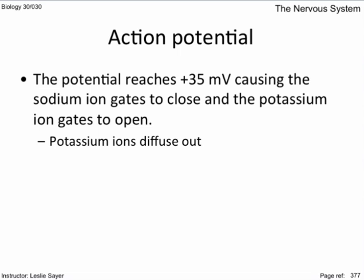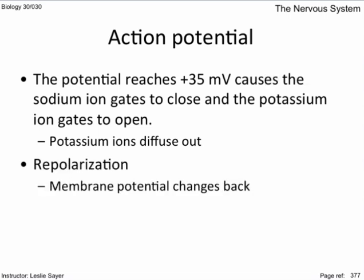The potential reaches plus 35 millivolts, causing the sodium ion gates to close and the potassium ion gates to open, whereby potassium ions diffuse out. Now there is a significantly more positive charge on the outside again relative to the inside of the membrane. Repolarization is when the membrane potential changes back — in fact it overshoots — the membrane potential drops to about negative 80 or negative 90 millivolts, described as hyperpolarization, which causes the potassium ion gates to close.